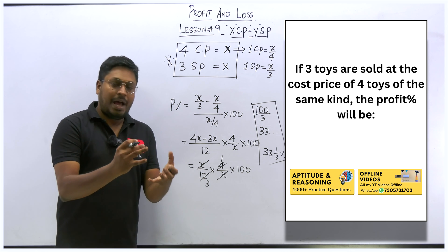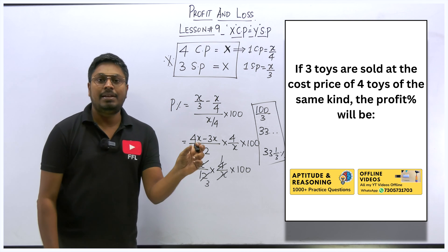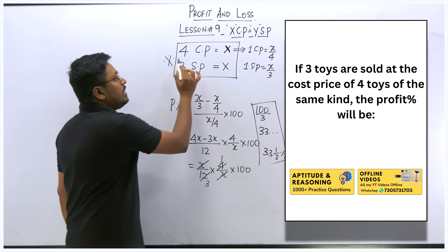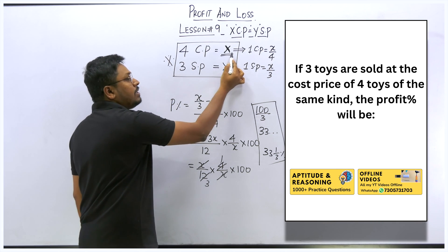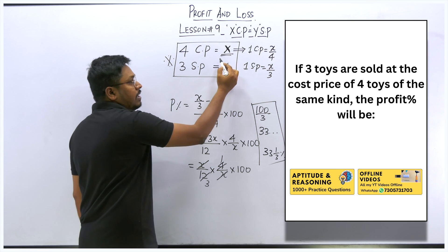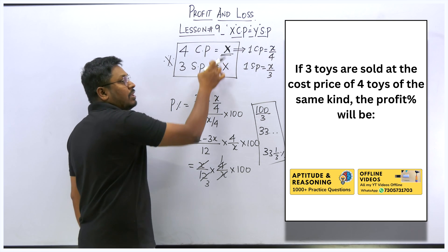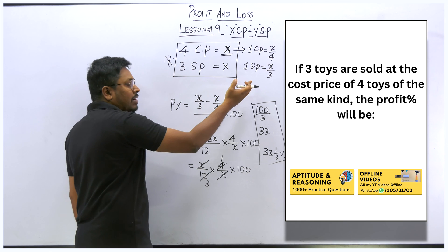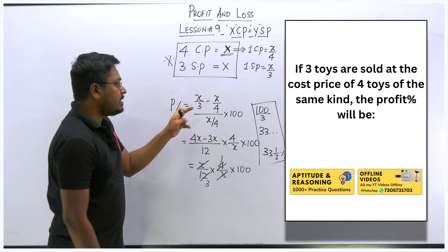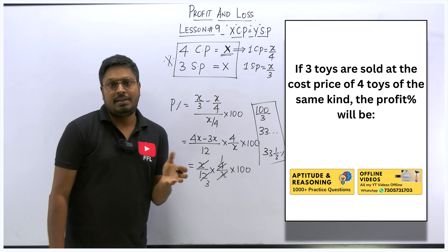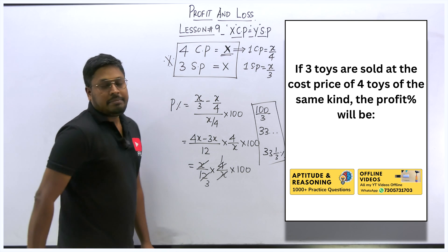So 33⅓% is the profit percentage for question one. To recap: first understand the question format difference between lesson three and lesson nine. In lesson three, the rupee value is directly given; in lesson nine, it is not given but both sides are equal, so we fix them both as x. Then we find one-unit CP and one-unit SP, apply the profit formula, and get the answer. If the result is negative it is a loss; if positive, it is a profit.